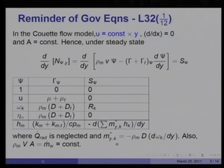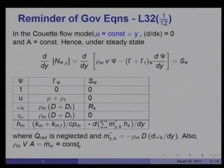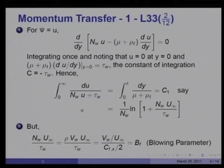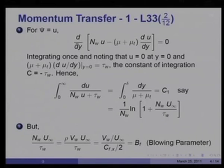M-double-dot y_k is the Fick's law diffusion flux, and rho·m·v·a equals m-dot_w, which is the mass flux, remaining constant. For the momentum equation with psi equal to u, there is no source term and the pressure gradient is also zero. Therefore the equation becomes: d/dy of (n_w·u minus (mu plus mu_t)·du/dy) equals zero.